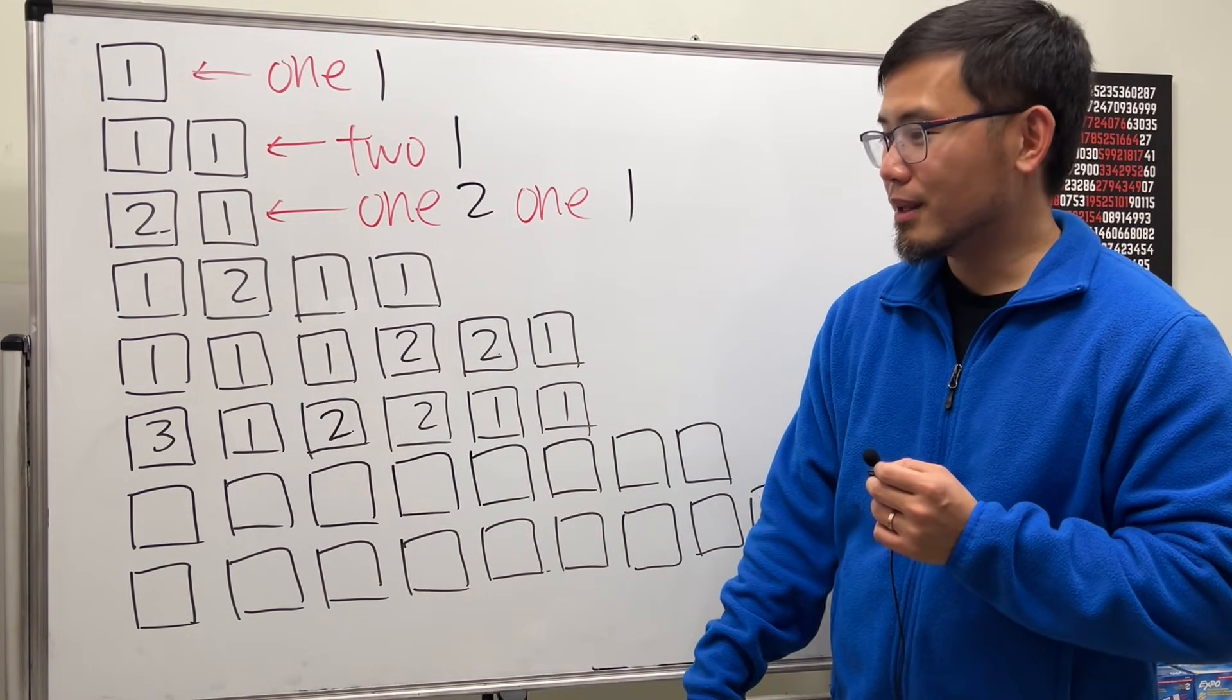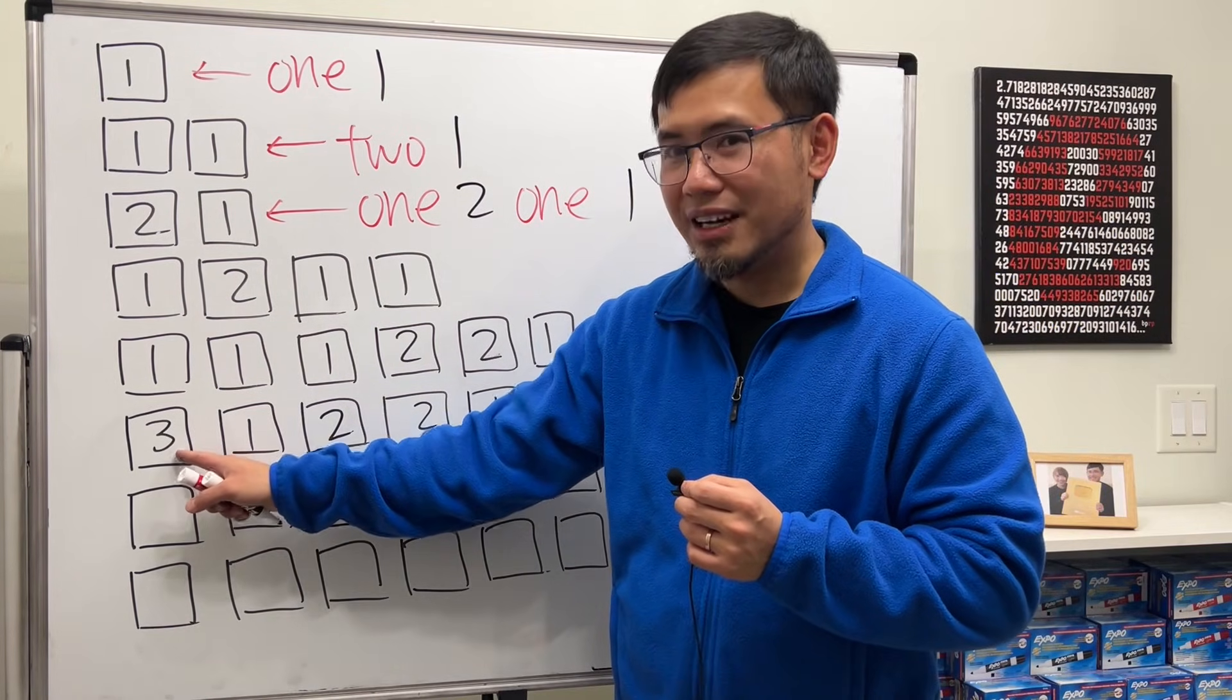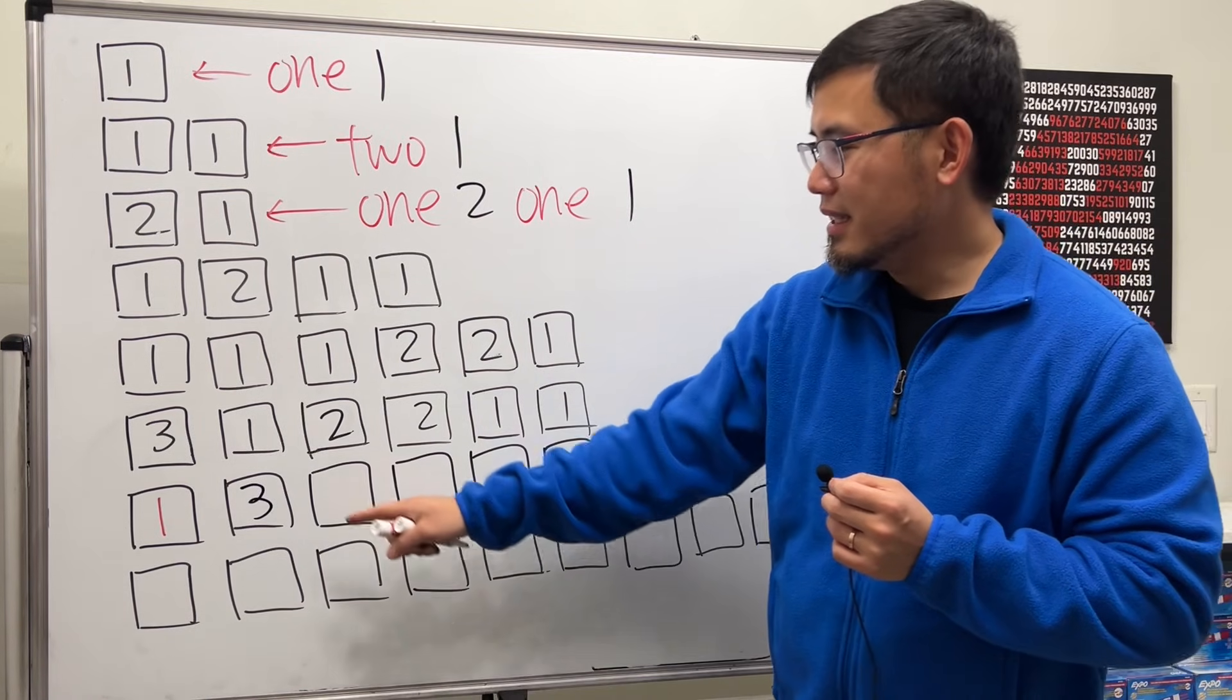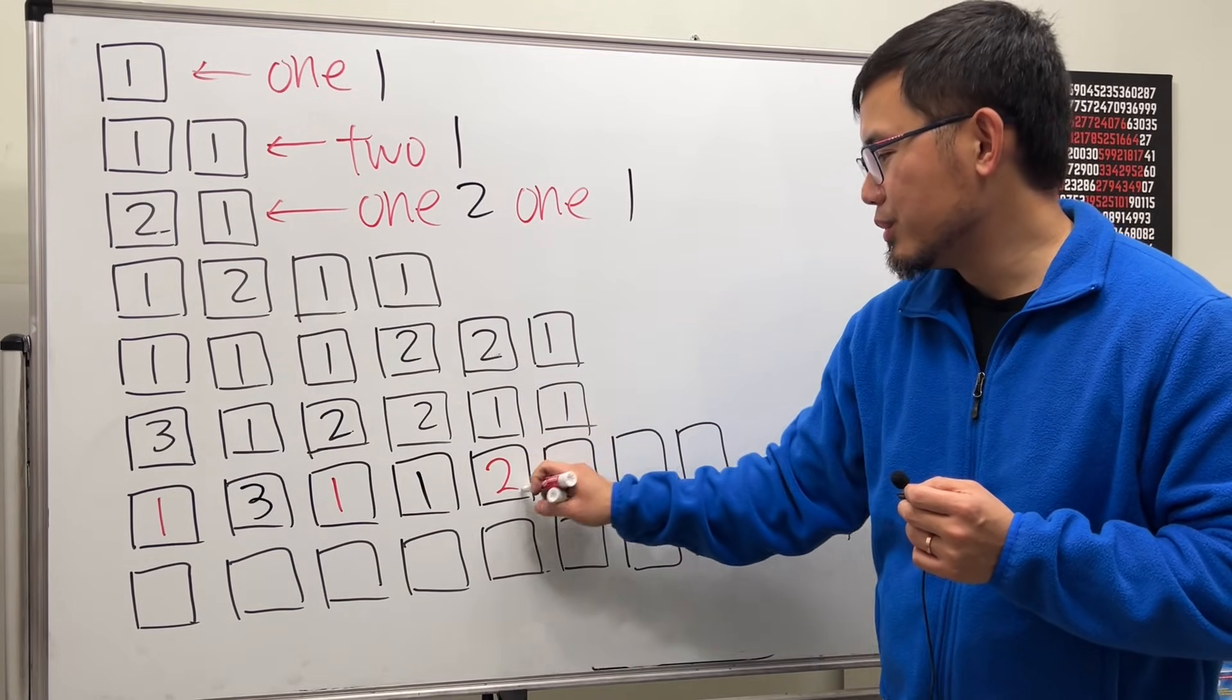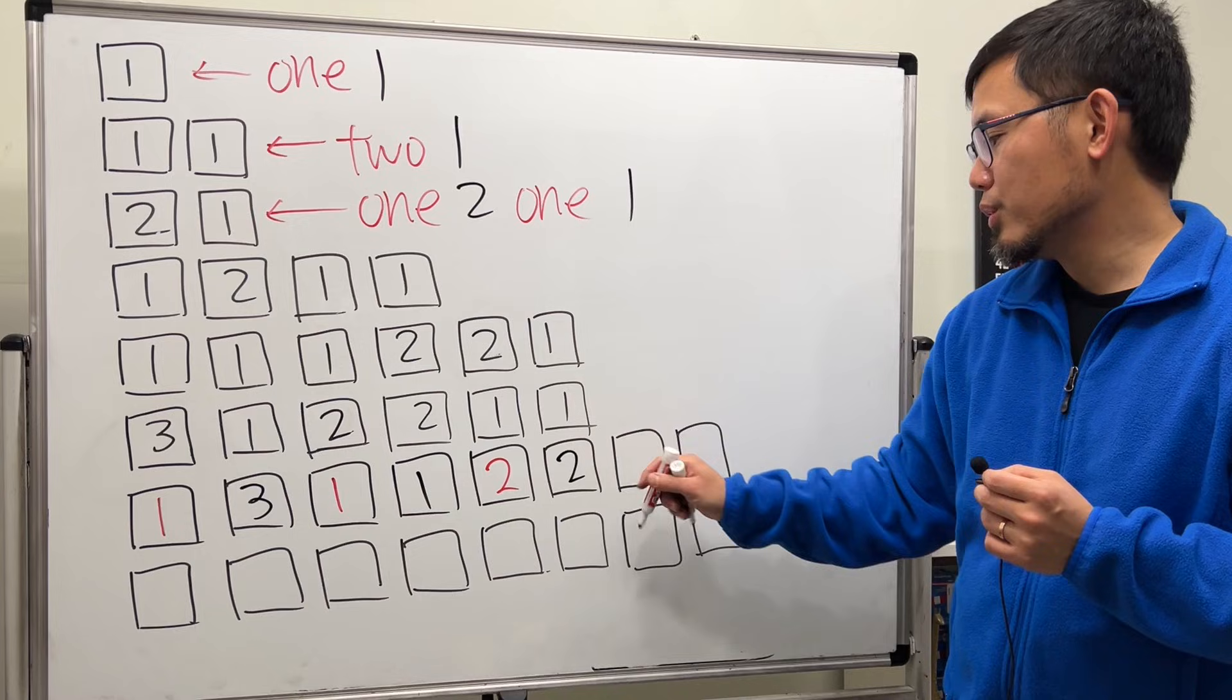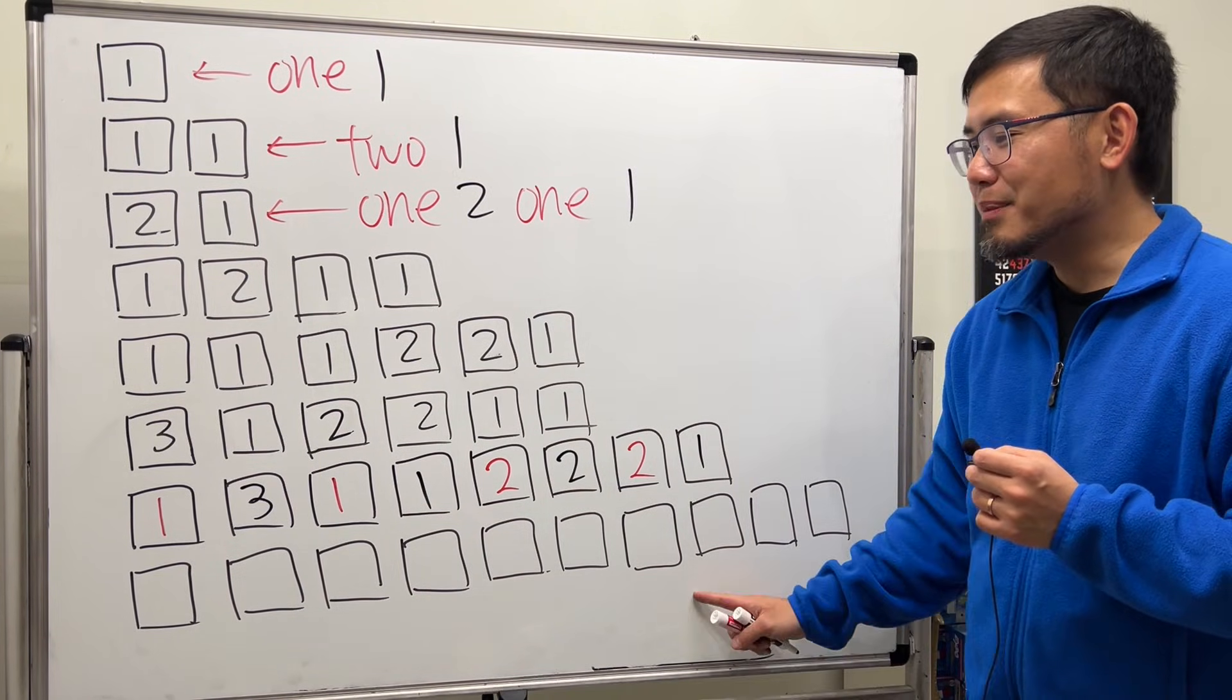We have how many ones? We have three ones. And then how many twos? We have two twos. And how many ones? One one. So now let's figure this out. How many threes do we have? We have one three. And then next we have how many ones? We have one one. Then how many twos do we have? We have two twos. And then lastly we have two one, just like that.